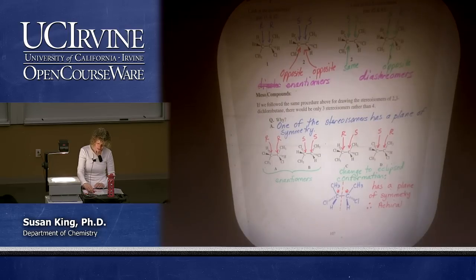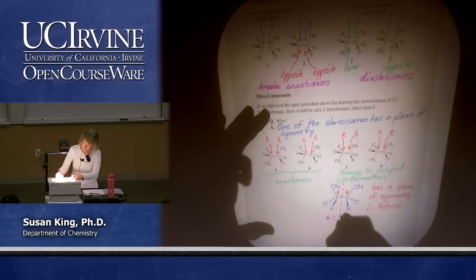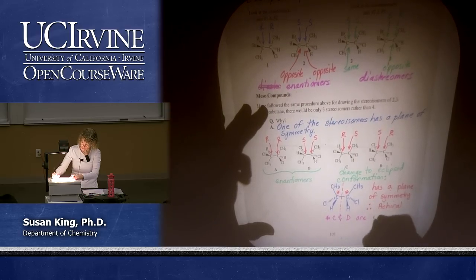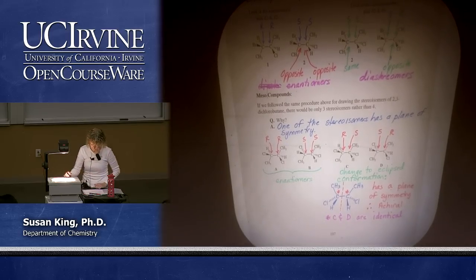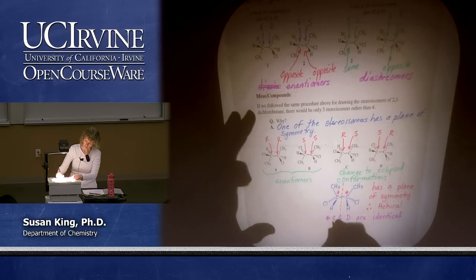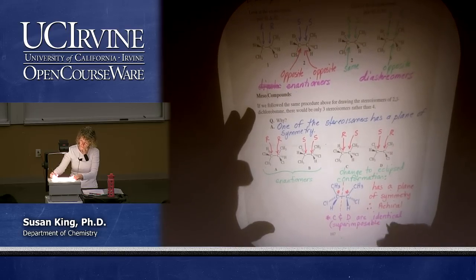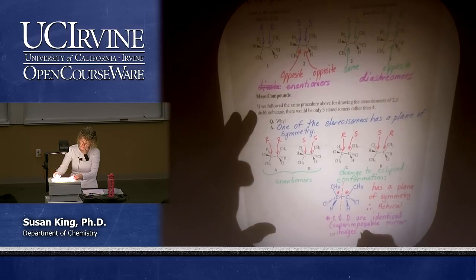This has two stereocenters but it has a plane of symmetry, therefore it's achiral. C and D are identical — they are superimposable mirror images, so they're identical. Once things are superimposable that means they're identical.